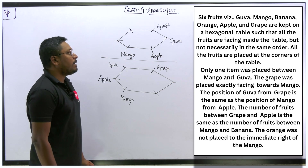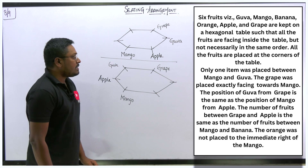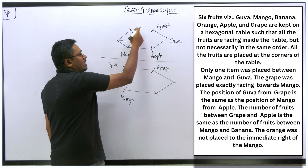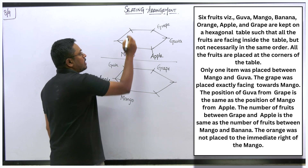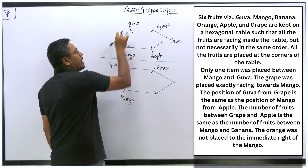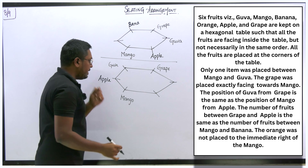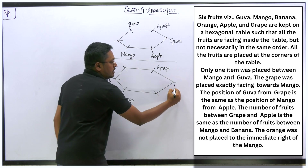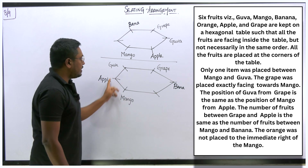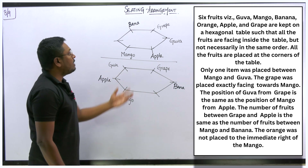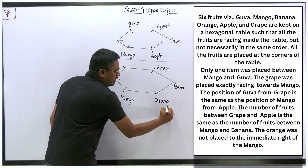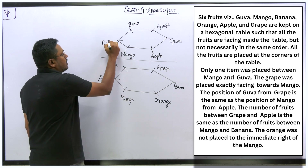Next point: the number of fruits between grape and apple is the same as between mango and banana. Between grape and apple, there is 1 on one side and 3 on the other. Similarly, between mango and banana, we can fix banana so that there is 1 fruit on one side and 3 on the other. Only one place remains — that will be for orange.